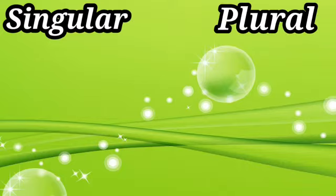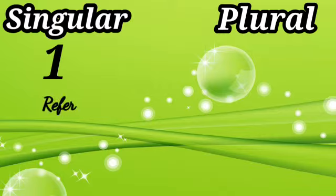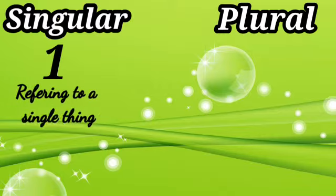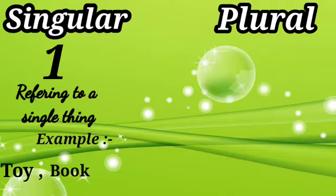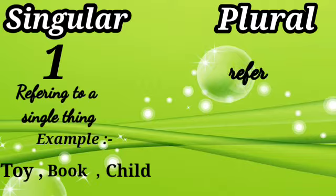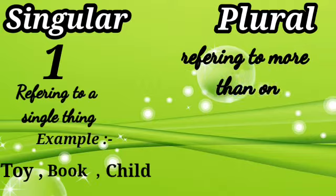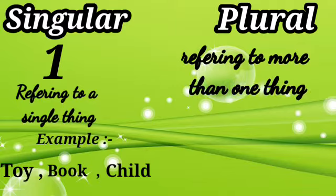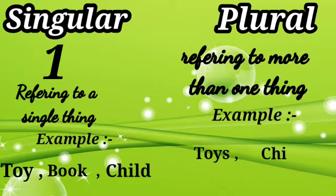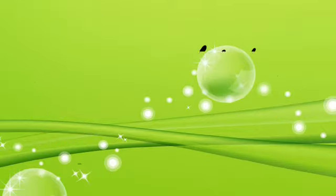Now let us talk about singular and plural nouns. Single means one, and singular noun means referring to a single person, animal, place or a thing. Plural noun means more than one — referring to more than one person, place, animal or a thing. Examples: toys, children and boxes.